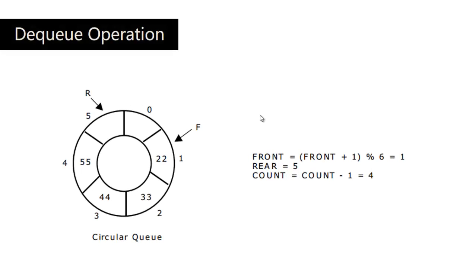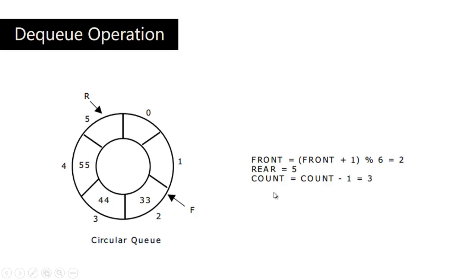Now let us delete an element. I have deleted 11 from the front end, so the front pointer moves to the first location — incremented in the same way as rear. Now front is pointing to 1 and rear is still 5. Count is decremented because we now have 4 elements. If I delete 22, the front is currently pointing to the third location, which is the 2nd index.